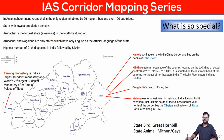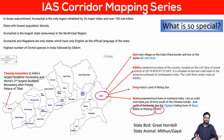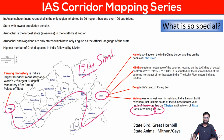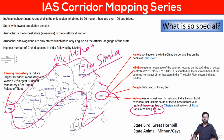Walong is famous because during the 1962 Sino-India war, the Battle of Walong took place here, where India actually inflicted heavy casualties on the People's Liberation Army of China. Regarding Tawang: China claims the entire Arunachal Pradesh as its own territory. In 1914, the McMahon Line was drawn as the boundary, but China does not accept this line and claims the entire state.